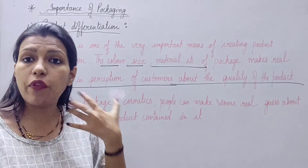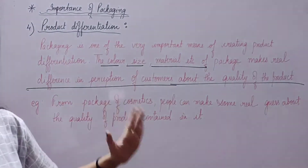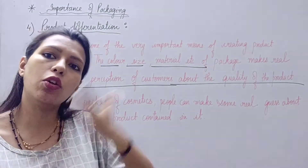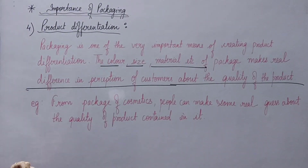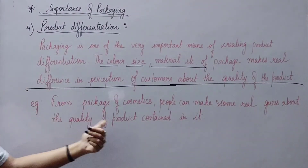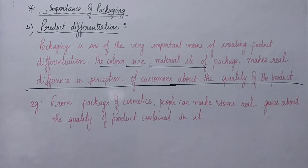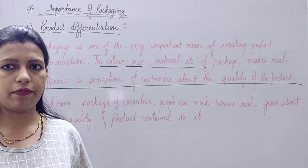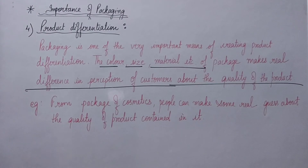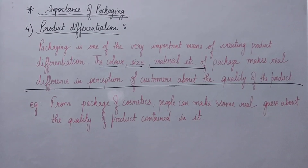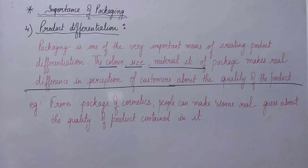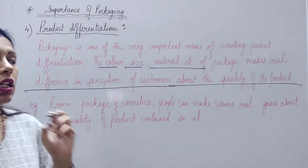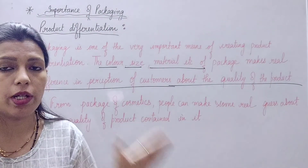If packaging is good, your perception about the product quality becomes positive. If packaging is bad or local, your perception about the product quality becomes negative. This is a psychological phenomenon. For example, from the package of cosmetics, people can make a real guess about the quality of the product inside. Good, solid packaging creates the perception that the product quality is very good. I repeat the key line: color, size, and material of the package makes a real difference in customer perception about product quality.